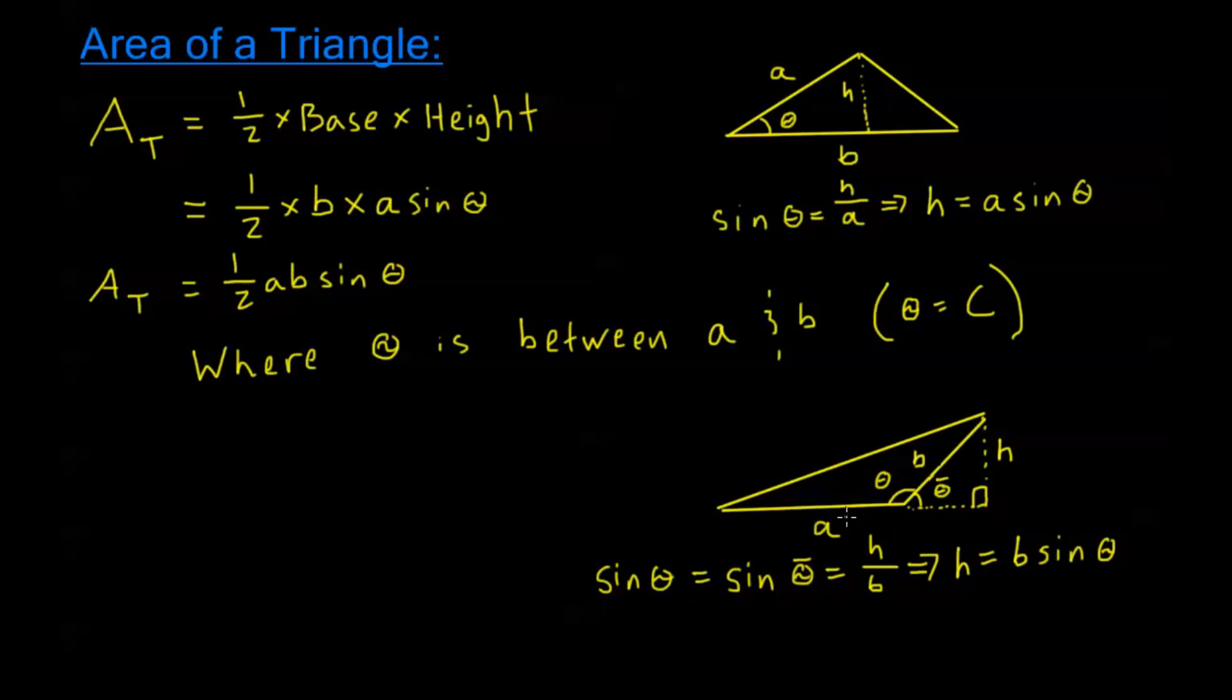Now here I've labeled it a little bit differently. I actually labeled my base as a. But this is still going to give us the same formula. Here where a is my base and h becomes b sine theta. So in either case, we get this new formula for a triangle based on the angle.